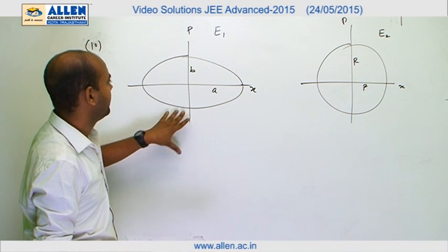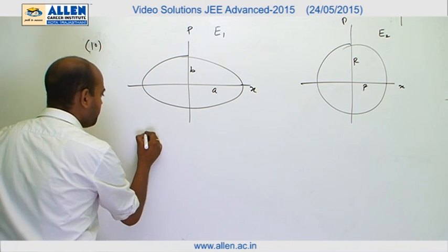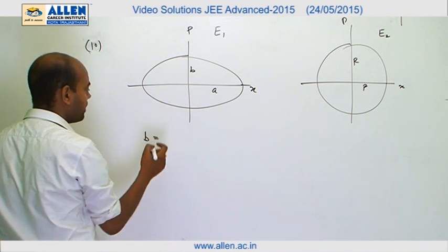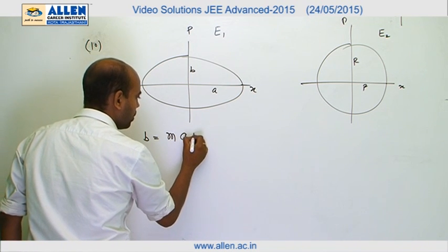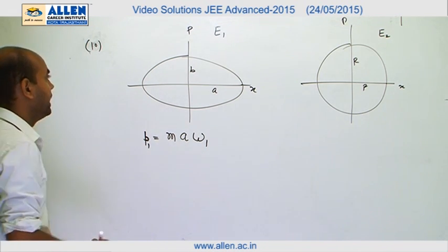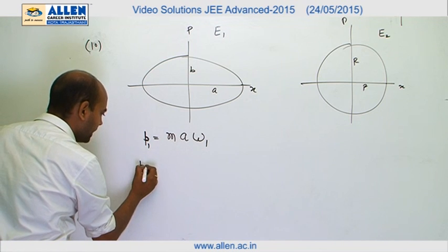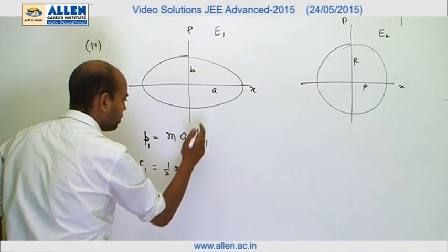So we can say B, which is the maximum value of momentum, equals M A omega 1. This is the value of P1. The energy E1 can be written as half M A squared omega 1 squared.